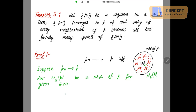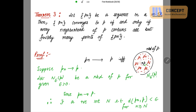Since it is given that pn converges to p, I now use the definition of convergence. By the definition of convergence, whenever pn converges to p, there exists a positive integer N such that the distance between pn and p is less than epsilon for all n greater than or equal to N.